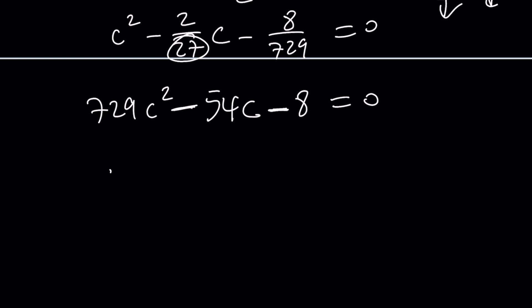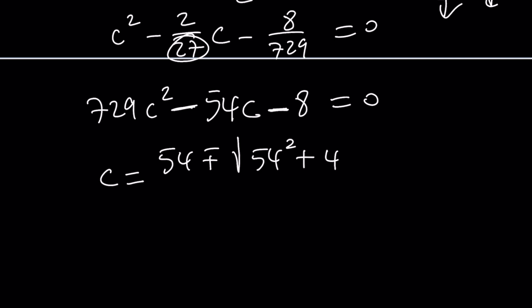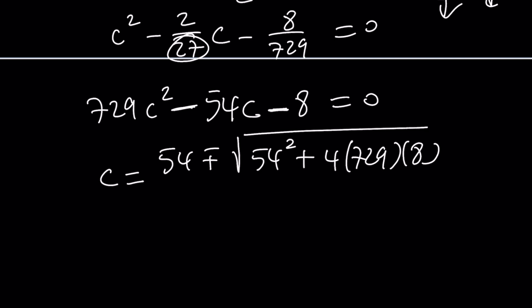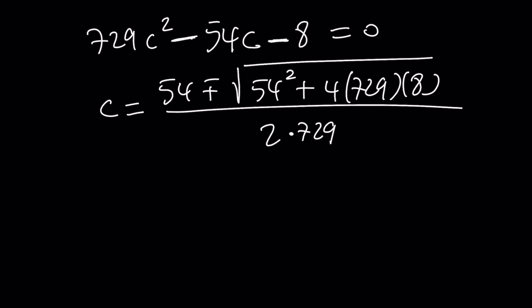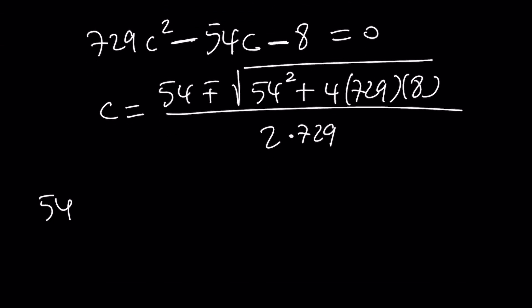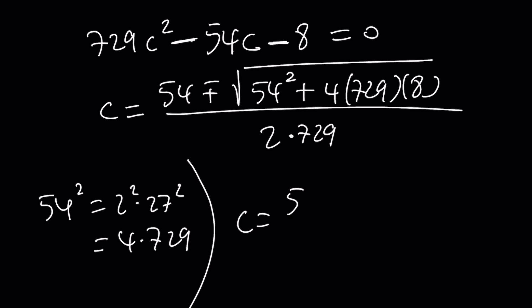One thing that makes this problem a little easier is the fact that 54 is 2 times 27. If you square it, 54 squared is basically 2 squared times 27 squared, which is 4 times 729. So 4 times 729 is actually a common factor inside the radical, which you can pull out.